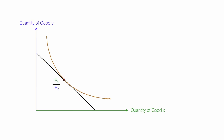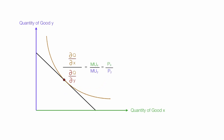What I'm going to show you is that the slope of the budget line, or the ratio of the price of x to the price of y, is equal to the slope of the indifference curve, or the ratio of the marginal utilities. And I'll be using some calculus to show you this.